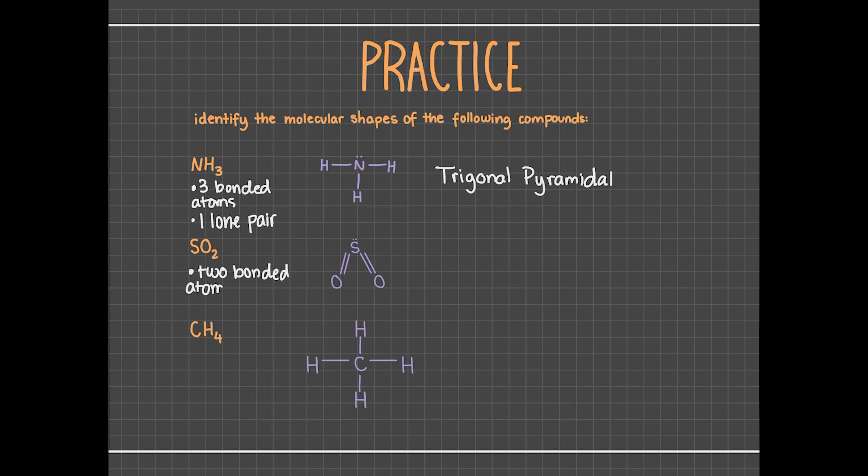For SO2, there are two oxygens bonded to the sulfur and one lone pair on the sulfur. Hopefully, you said that this molecule is bent, because bent molecules may have two bonded atoms and one lone pair on the central atom.